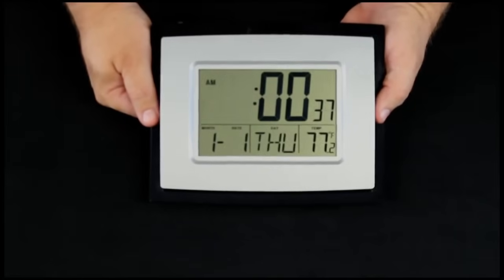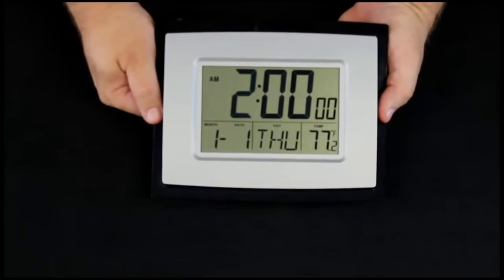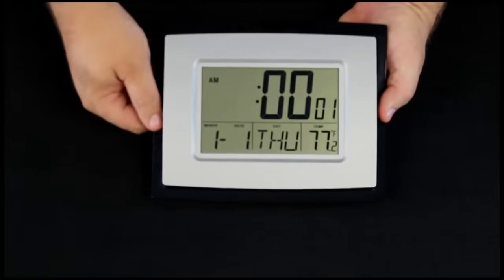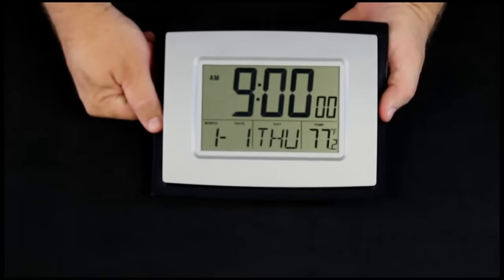Pressing the set button again, the hour is flashing and we change that using the plus button. Watching for a.m. and p.m., we want this to be at 5 p.m. in the afternoon.